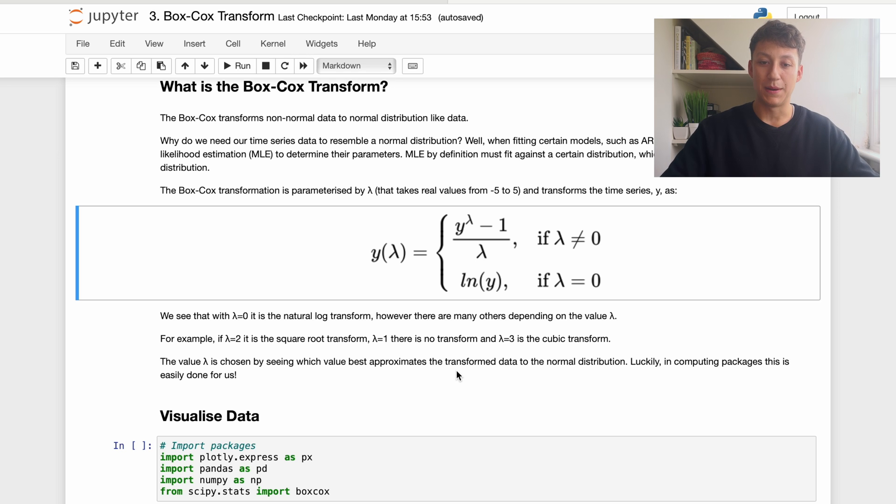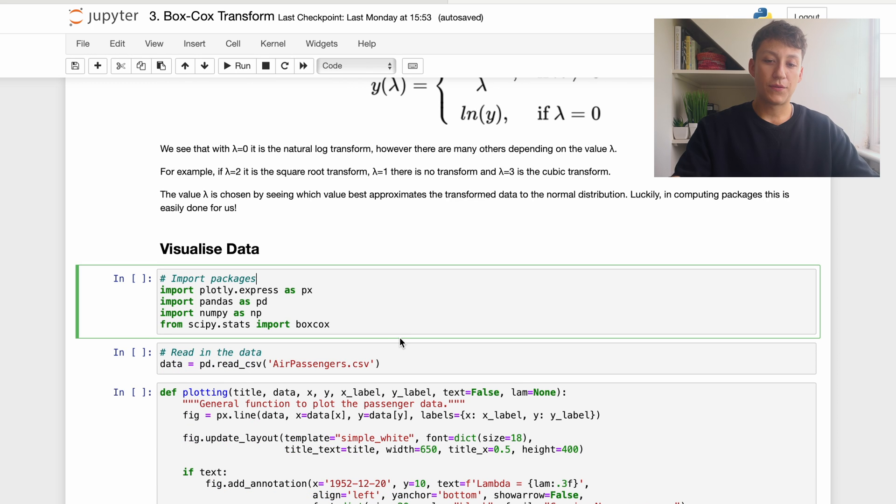So the key concept to remember here is that the Box-Cox transform changes our non-normal data to data which is more normal, and does this by using this parametrization and trying to find the most optimal value of lambda that leads to that normal state of the data.